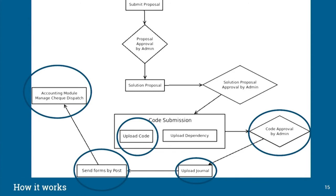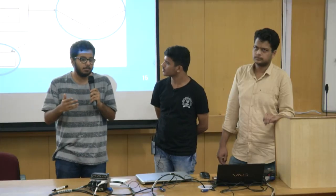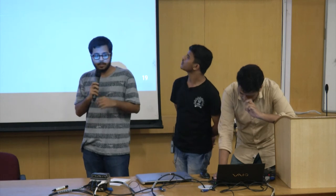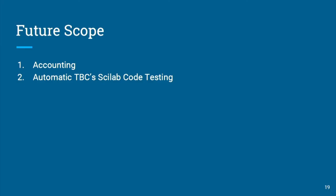Regarding payment: after lab conversion is complete, the user sends an undertaking by post, transferring intellectual property rights over their code to the Scilab team. A bridge between the accounting section and the user was implemented to check the status of these dispatch documents and send payment checks accordingly. The accounting module is not yet fully completed.